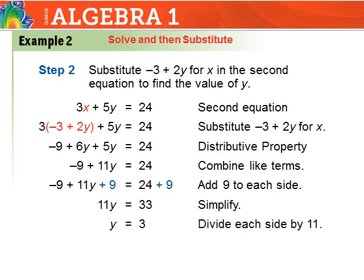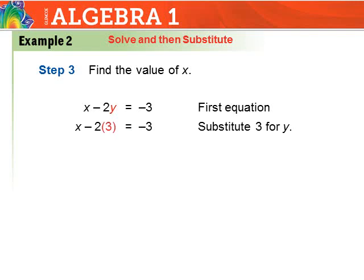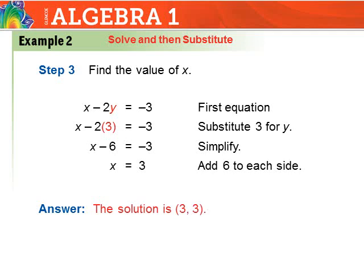Now for step three, we find x by substituting y equals 3 into the first equation: x minus 2y equals negative 3 becomes x minus 2 times 3, which is x minus 6 equals negative 3. Adding 6 to both sides gives x equals 3. So the solution set is the ordered pair (3, 3).